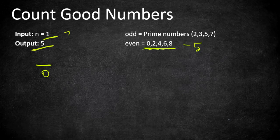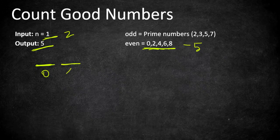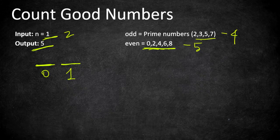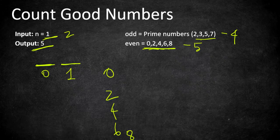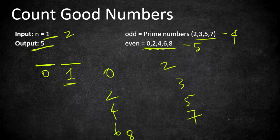If n equals 2, the first position (index 0) is even, so it has 5 possible even digits: 0, 2, 4, 6, 8. The second position (index 1) is odd, so it must have a prime digit. The prime numbers less than 10 are 2, 3, 5, 7 — giving 4 possibilities. You can then form all combinations like 02, 03, 05, 07, 22, 23, and so on.